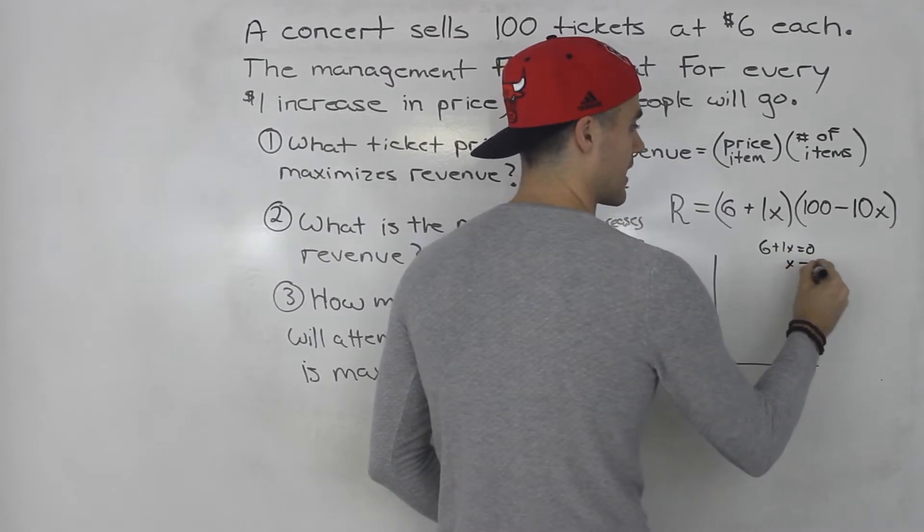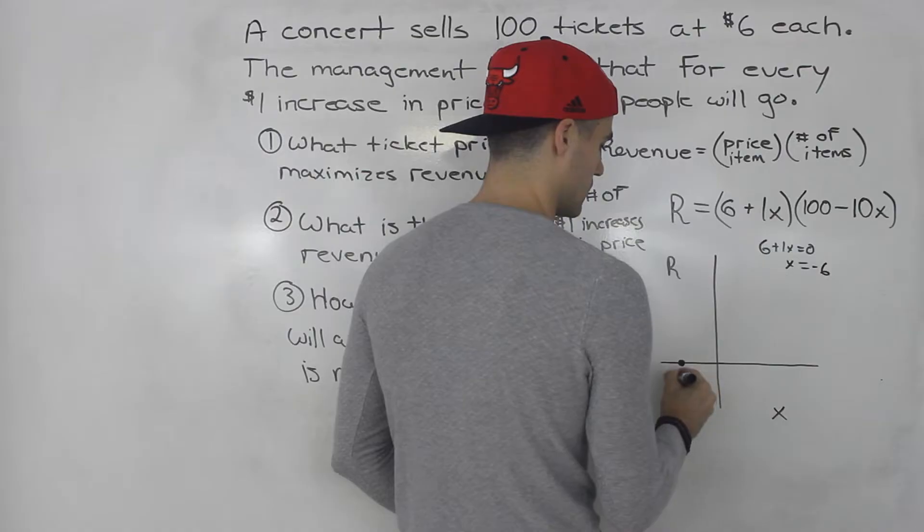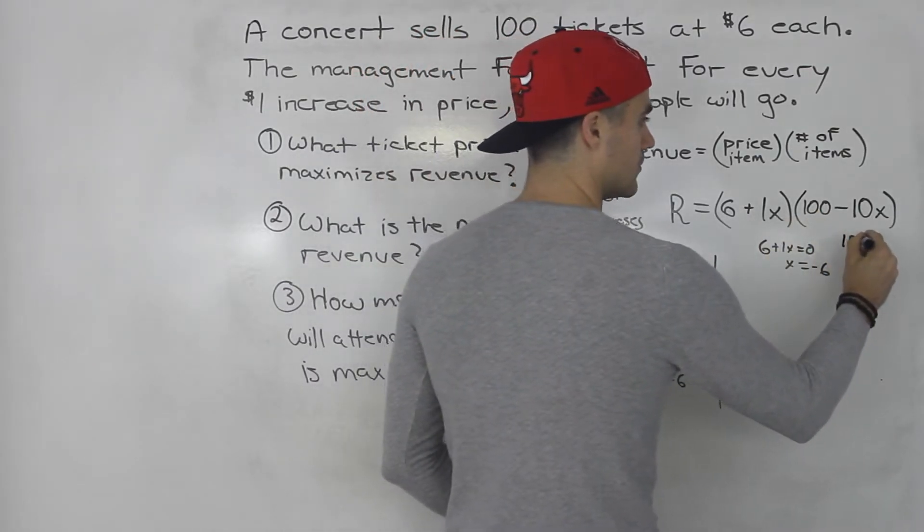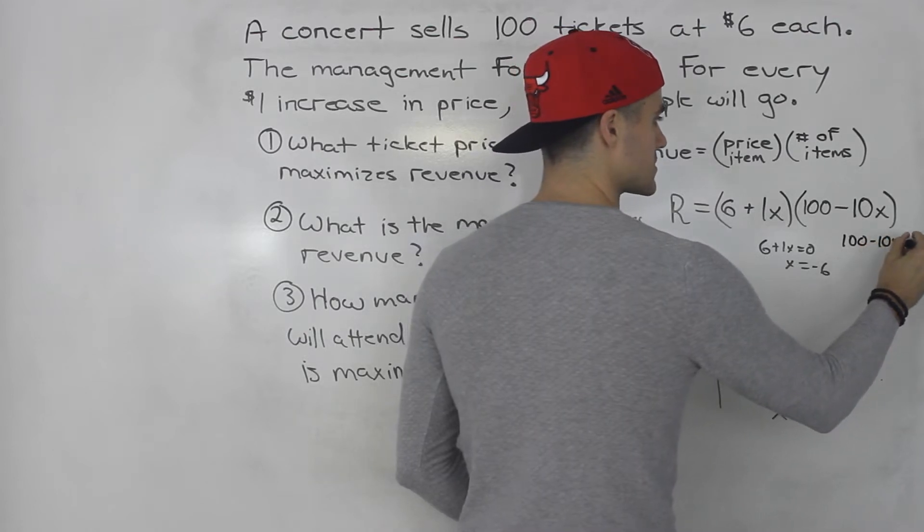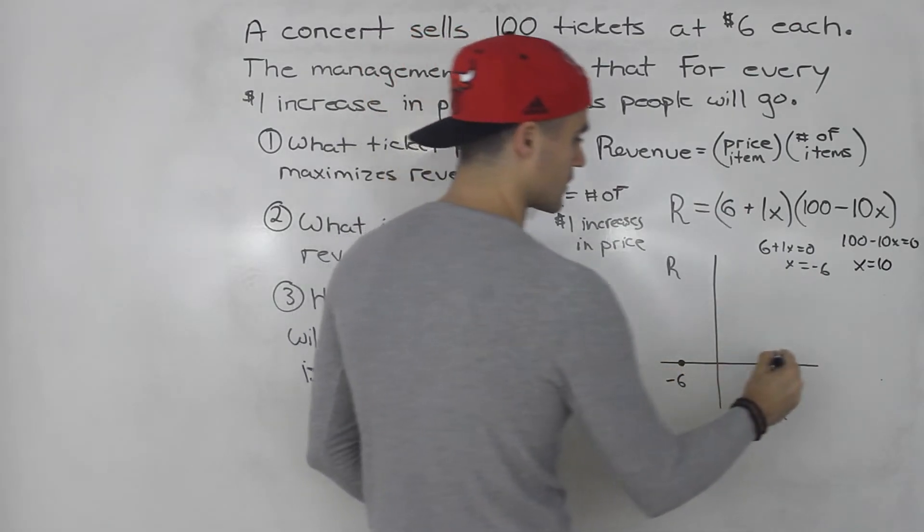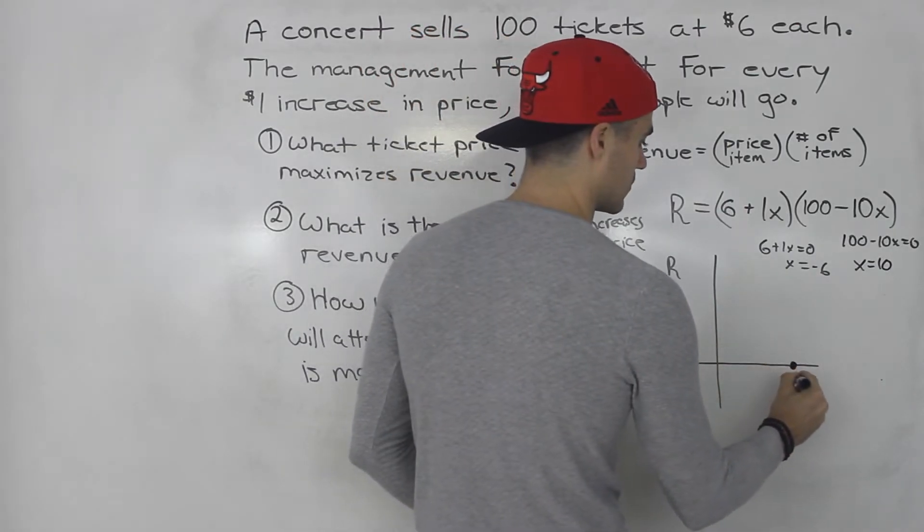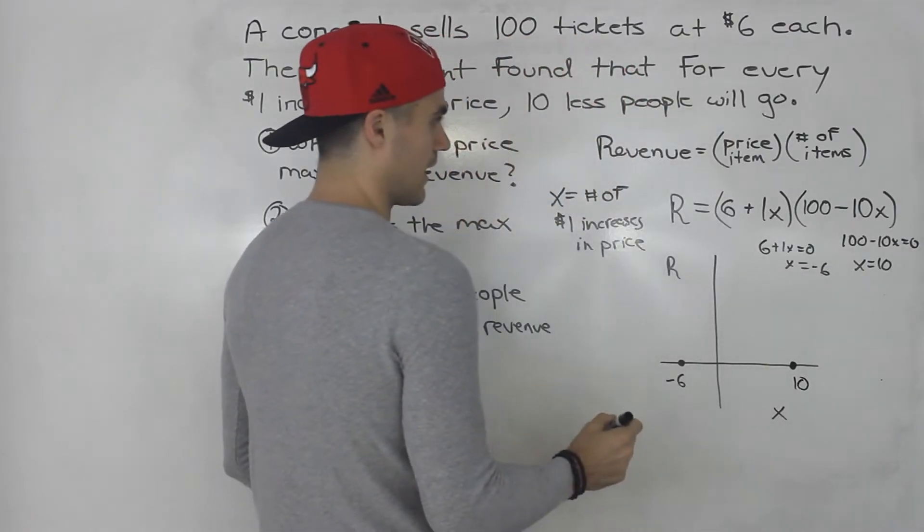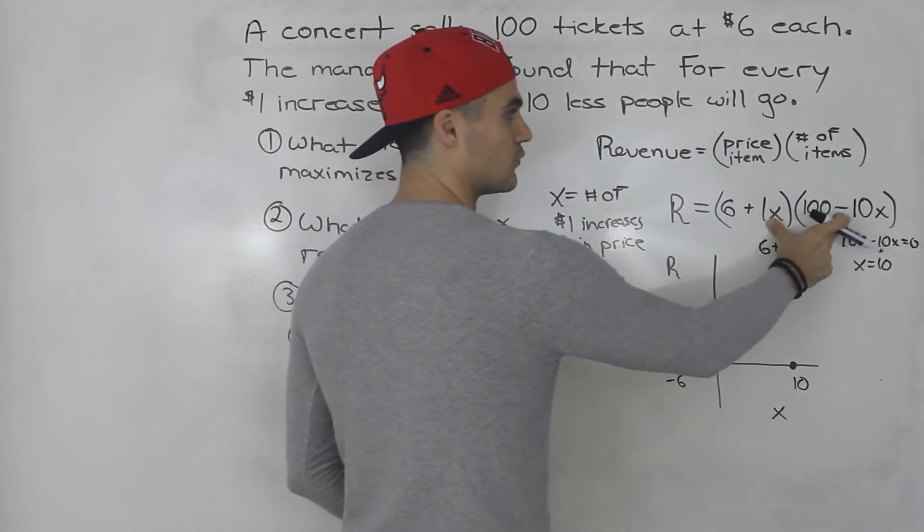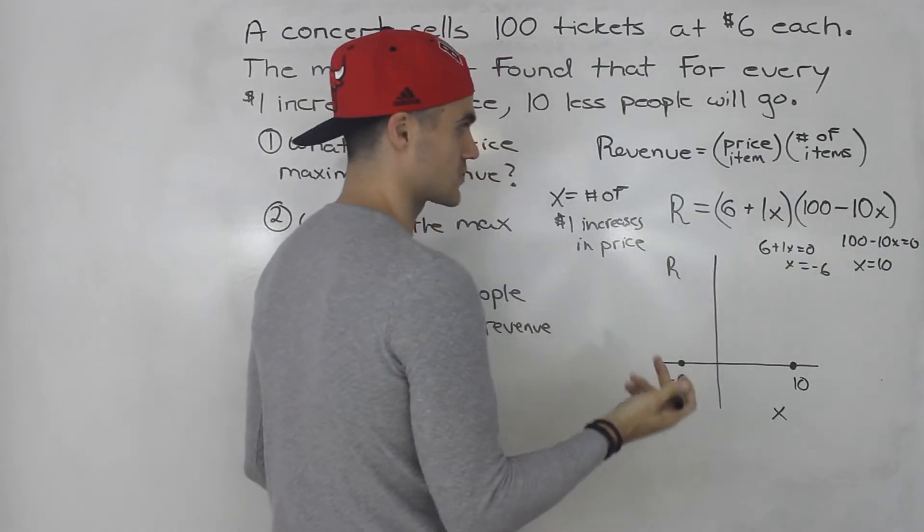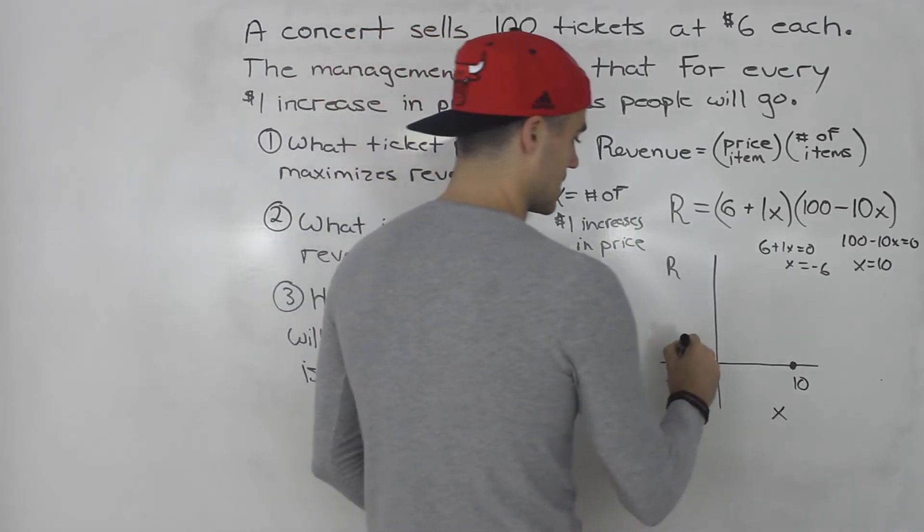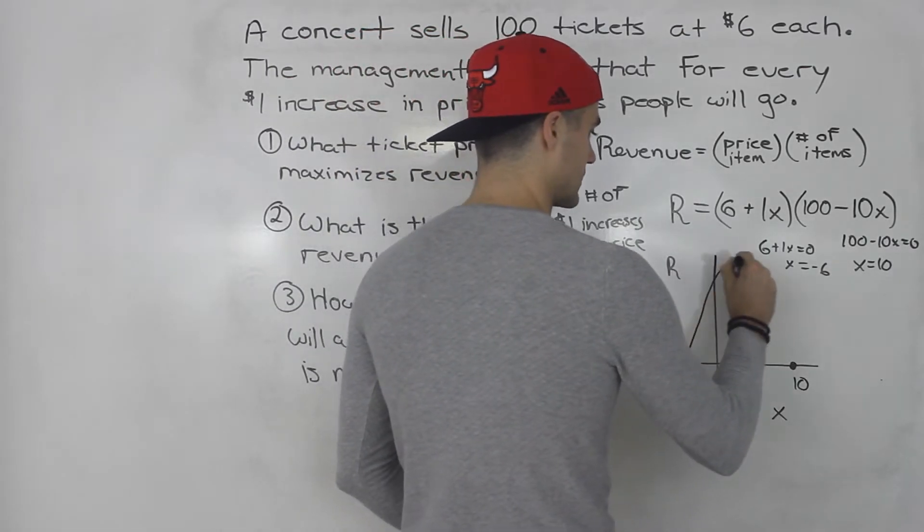And then 100 minus 10x equals 0, that's going to happen at x equals 10. This is a parabola that's going to be opening down because if we expand all this, the leading coefficient is going to be negative 10x squared. So we know this parabola is going to look something like this.